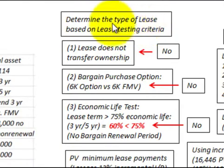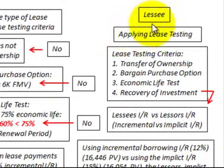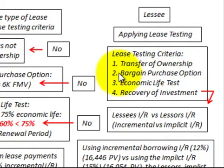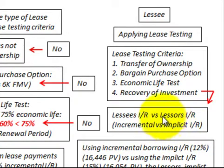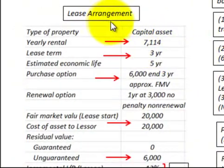Here we're going to look at how to determine the type of lease based on some lease testing criteria. We're going to start with the lessee and apply lease testing. The criteria includes transfer of ownership, a bargain purchase option, economic life test, and recovery of the investment. The key point is we'll compare the lessee's incremental rate versus the lessor's implicit rate, and which one to use for the present value of the minimum lease payments.